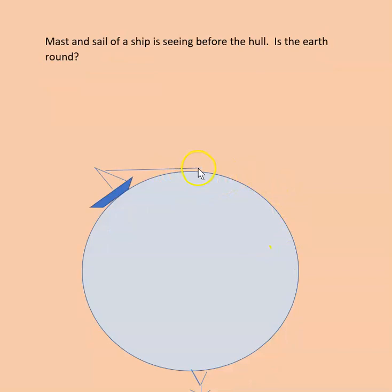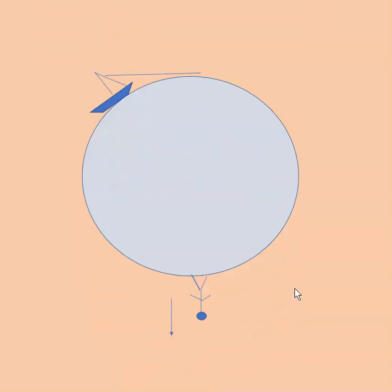Then Greeks started to wonder: why would you see the sail and mast before the hull of a ship? Someone — I think Eratosthenes or someone like that — theorized that the world has to be round. Then the question was: if the world is a sphere, what's going to happen to people? Don't they fall off? How could they stand on a sphere? People didn't have an answer, so they thought it cannot be a round thing.